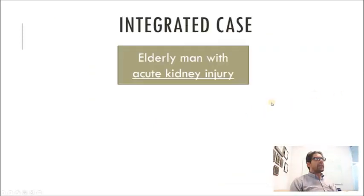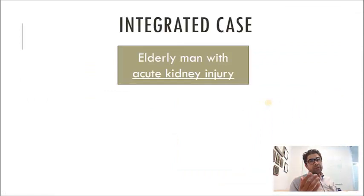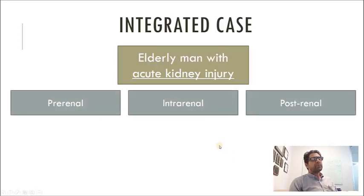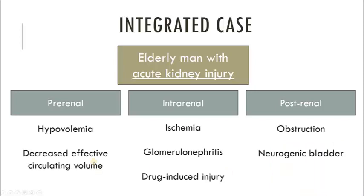Let's look at another integrated case. An elderly man with acute kidney injury. Even early clinical learners know a good scheme for AKI: pre-renal, intra-renal, or post-renal. They may not remember all the causes under each, but you can prompt them. Pre-renal is hypovolemia or decreased effective circulating volume. Intra-renal is ischemia, glomerulonephritis, or toxin-induced injury like a drug-induced injury. These are actually almost schema within a scheme — sub-layers to each, like peeling back an onion.